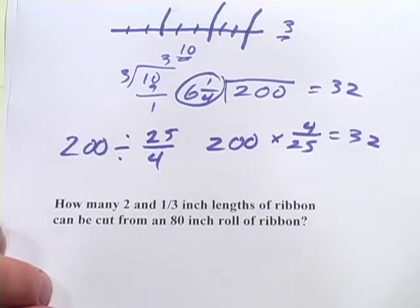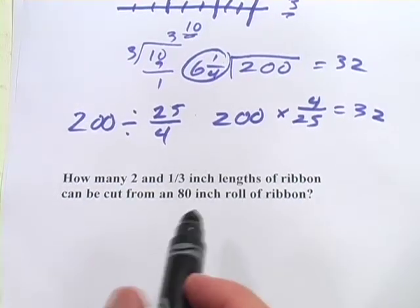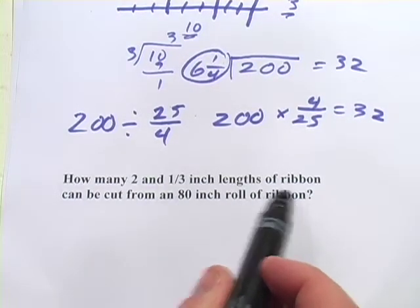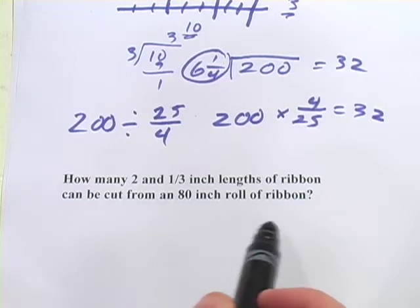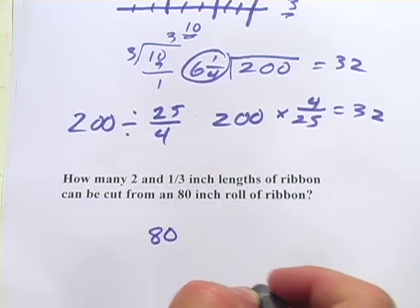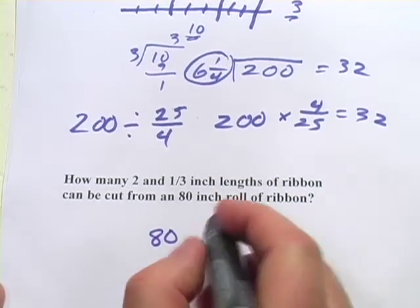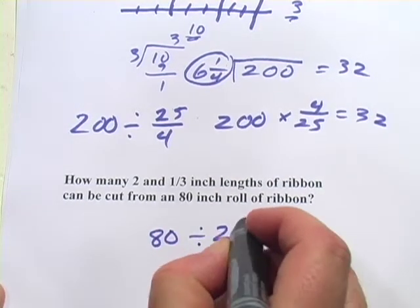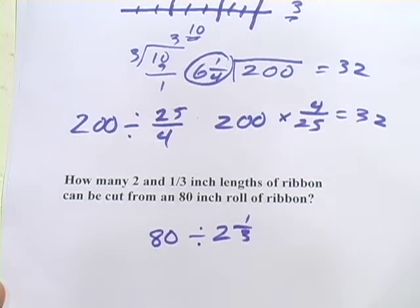Let's look at one more. How many two and one third inch lengths of ribbon can be cut from an 80 inch roll of ribbon? So again, this is just going to be 80, our whole number, our total length here, divided by the size of the pieces we want, two and one third.